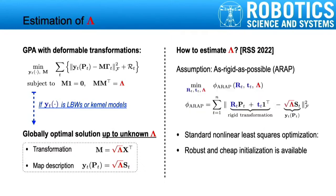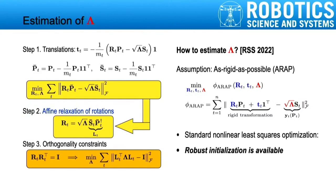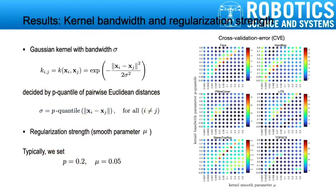We use pairwise prerequisites in RJCV by assuming some points are globally visible in all point clouds. This is a strong assumption for SLAM as observations are typically local. Instead, in this work we propose to solve a unified optimization, which is a standard nonlinear least squares solvable by Gauss-Newton iterations. We give a robust and cheap initialization: we first eliminate translations and calculate an affine relaxation through the rotations, then use orthogonality constraints to obtain a linear least squares in lambda. We use a Gaussian kernel for experiments and design the kernel bandwidth and regularization strength by cross-validation.